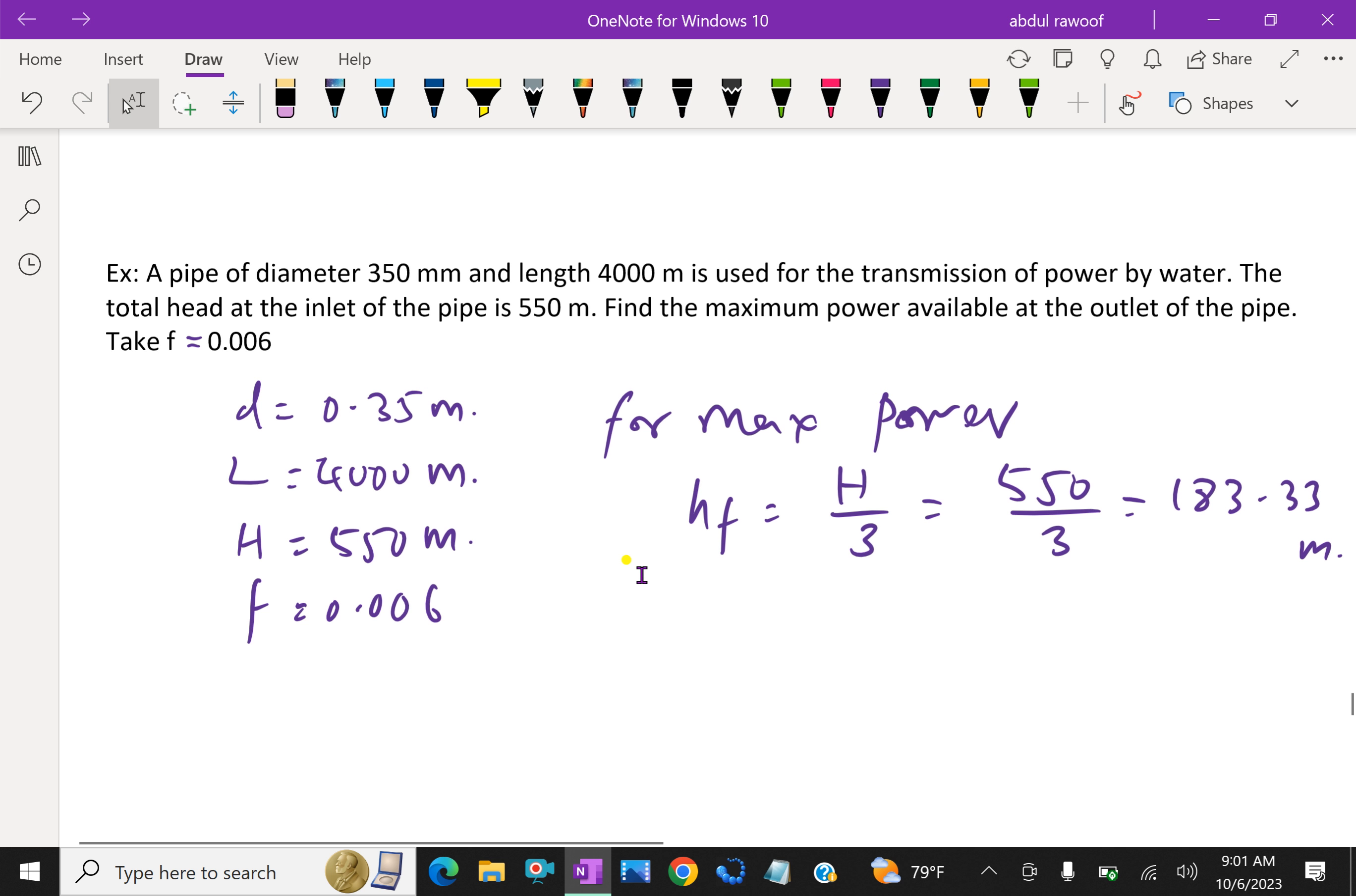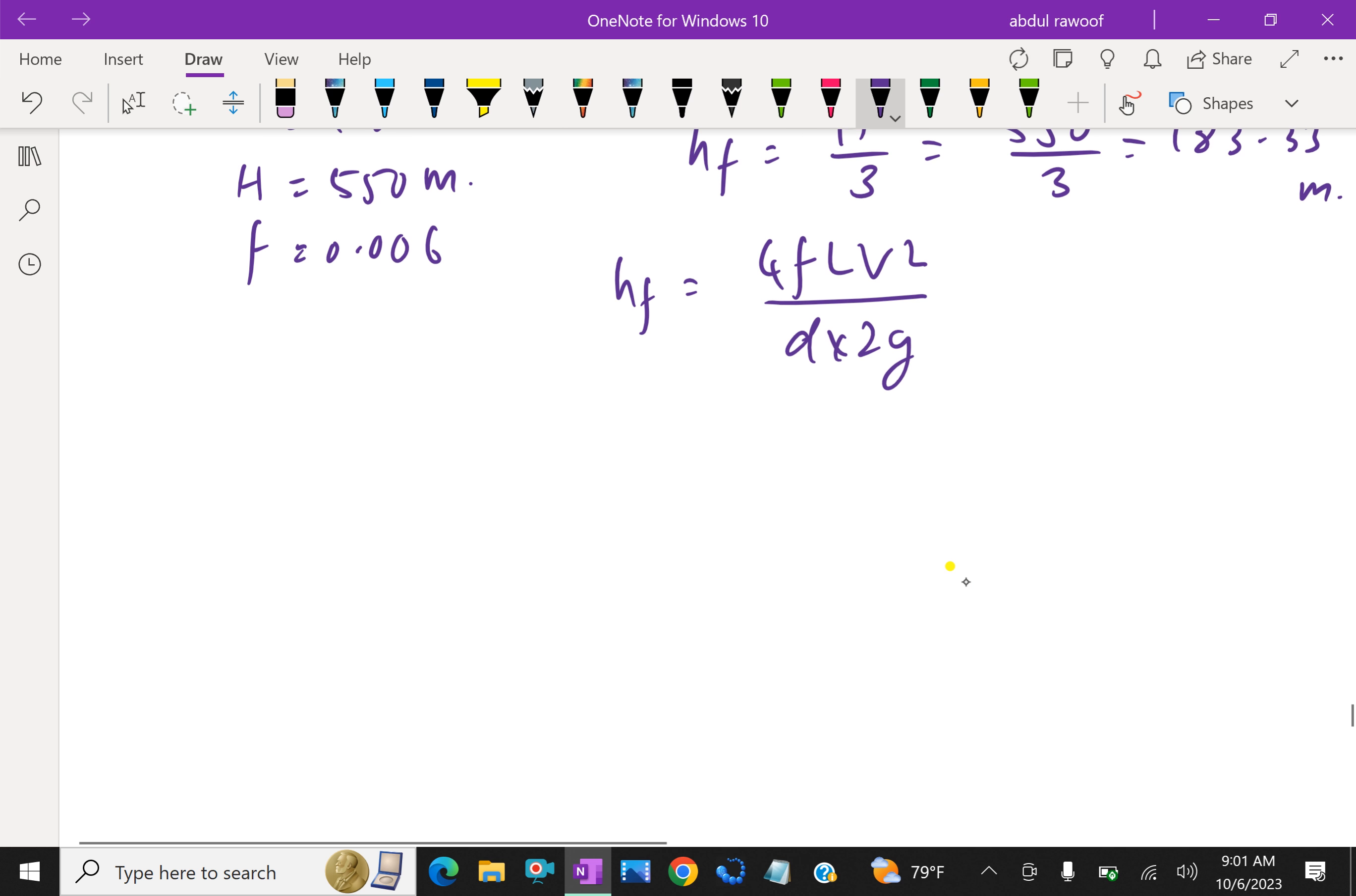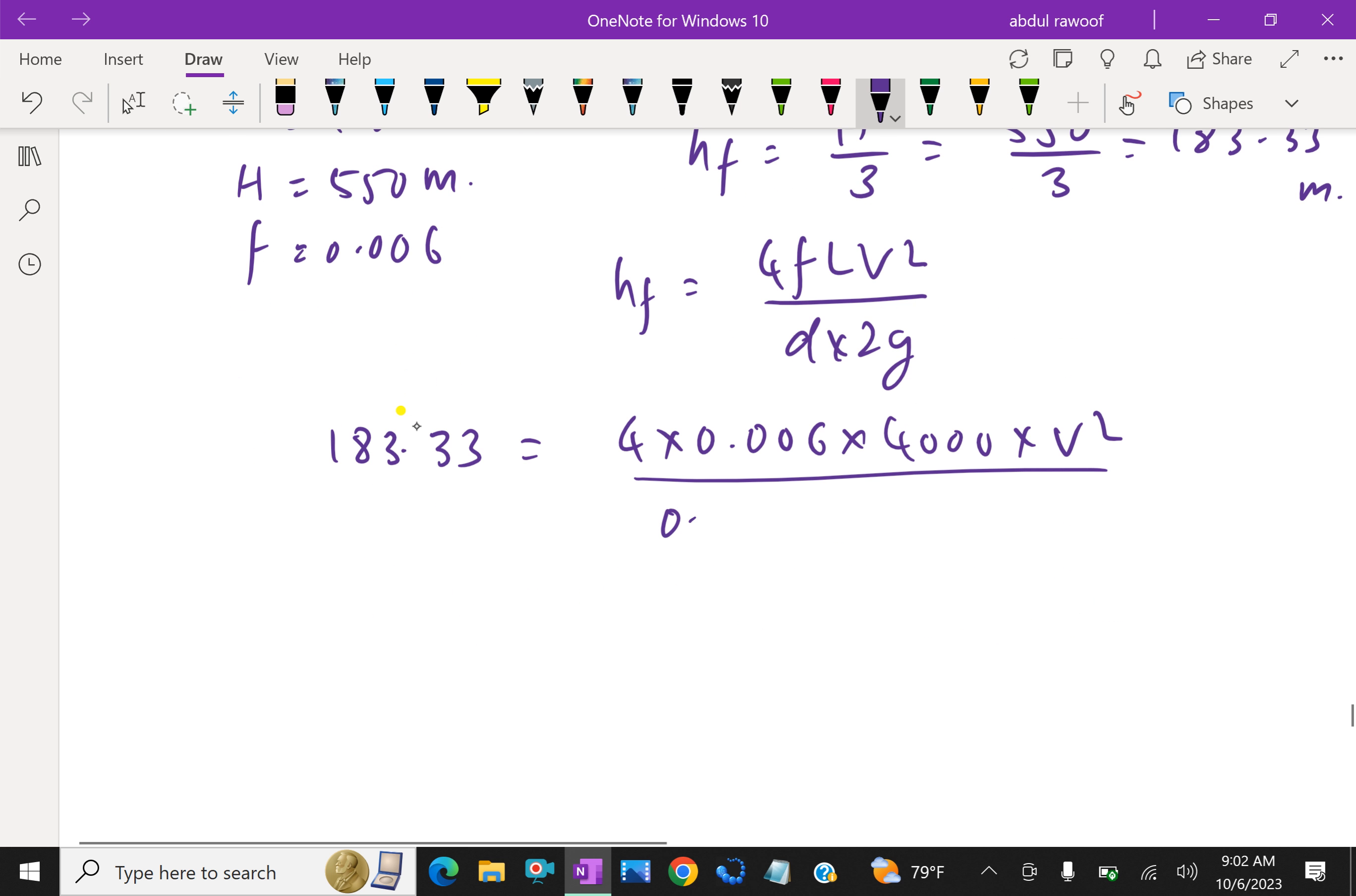We know that hf formula is 4fLv squared by d into 2g. Substituting, 183.33 equals 4 times 0.006 times 4000 into v squared over 0.35 meter into 2 into 9.81.